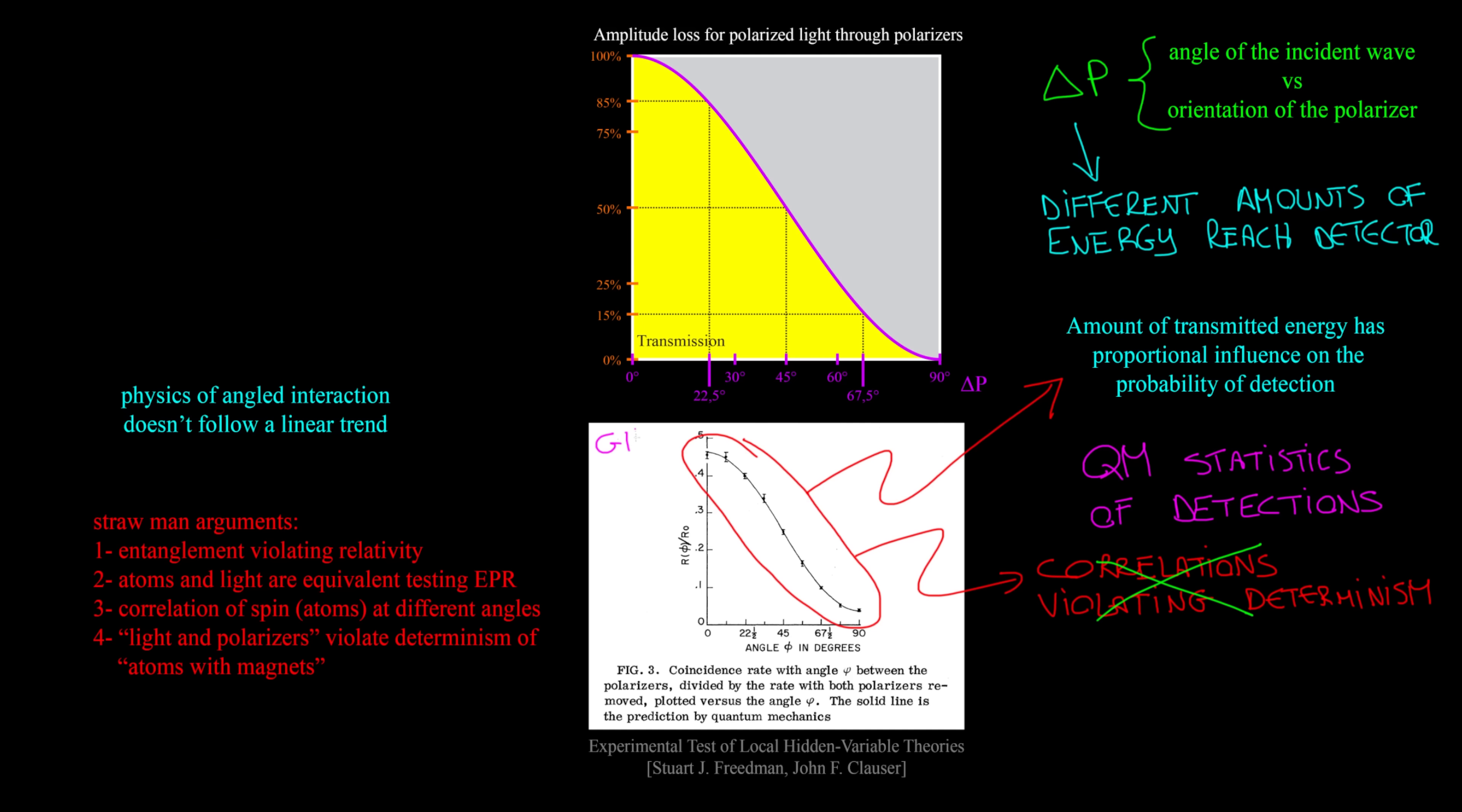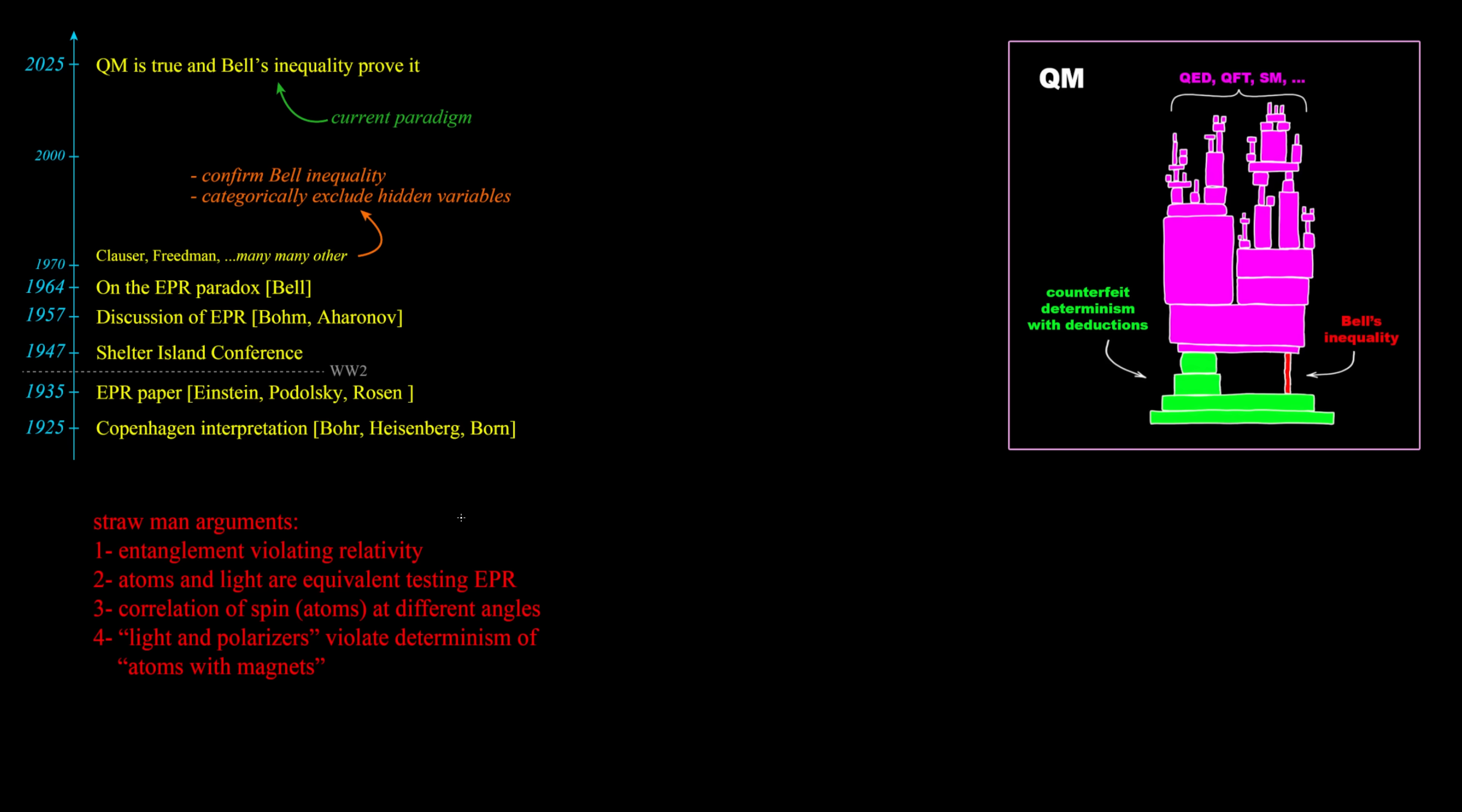Following this, it doesn't matter which Rube Goldberg experiment physicists put in place. Entanglement doesn't violate relativity. It's a deterministic correlation with both realism and locality. Spacetime separation and the timing of measurement cannot change in any way the results. Everything originated from Aronov and Bohm and by overlooking the differences between atoms and light.